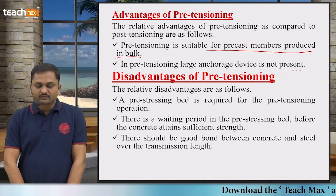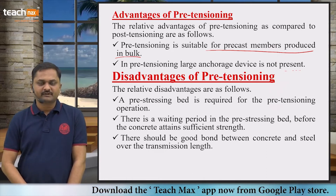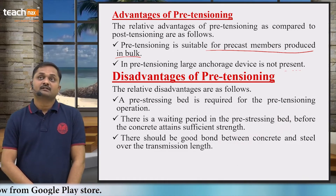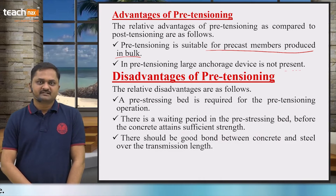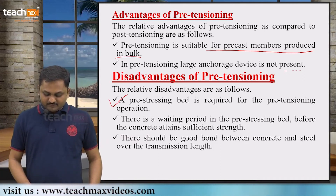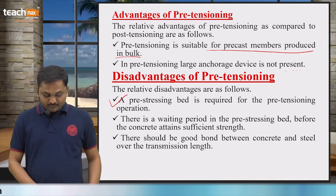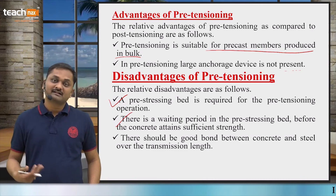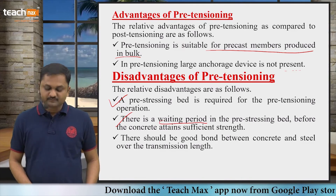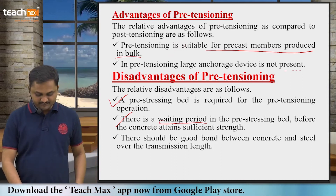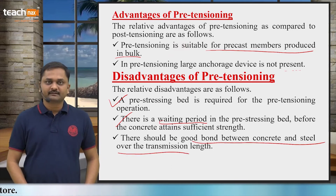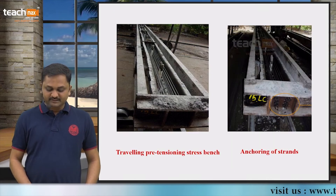Disadvantages of pre-tensioning compared to post-tensioning: bulk production can be done in a factory, but where loads are very heavy — with girders, beams, and slabs — pre-tensioning is not possible. A pre-tensioning bed is required for the operations. There is a waiting period in the pre-tensioning bed before concrete attains sufficient strength. Also, there should be a good bond between concrete and steel over the transmission length.